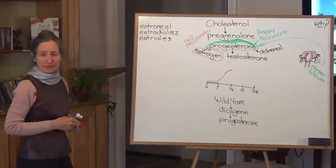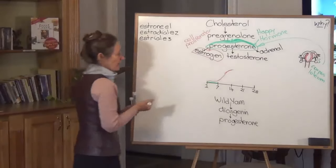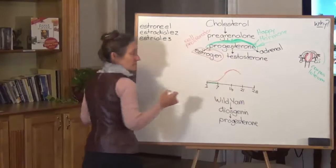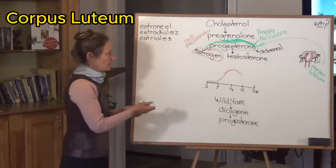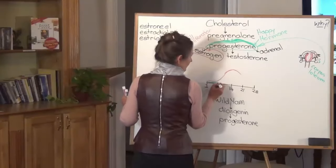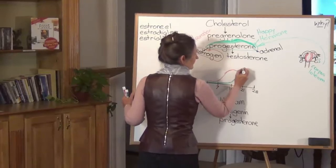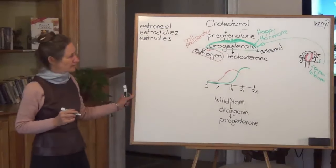So around day 14, estrogen gets the message it can go backstage because we've already got our blood nest, we've got our lubricant and our egg. There's no need for more estrogen. With the development of corpus luteum around day 14, then progesterone levels rise. Progesterone is now the star player in the dance of the hormones.